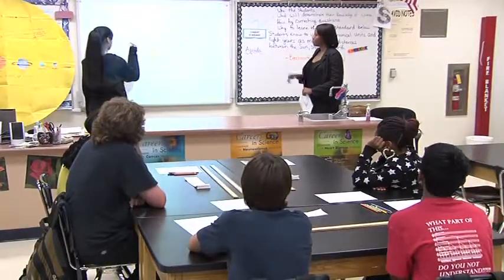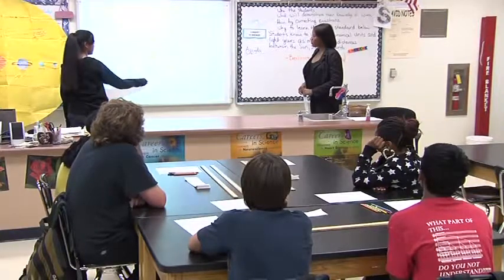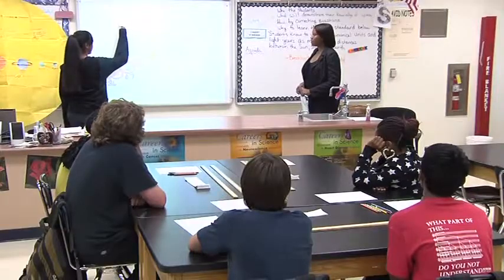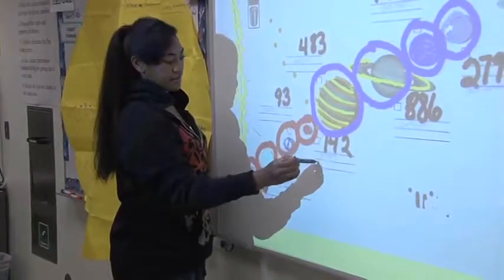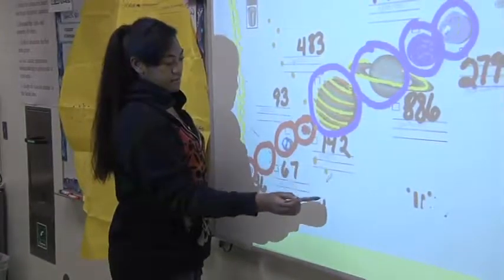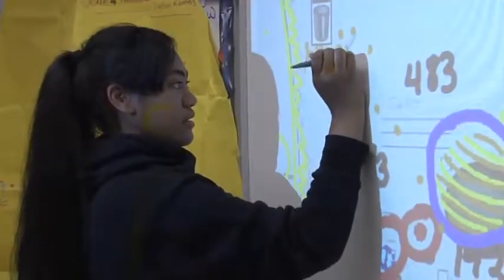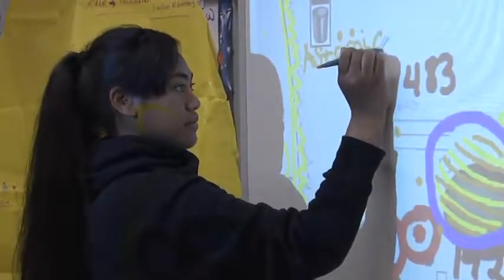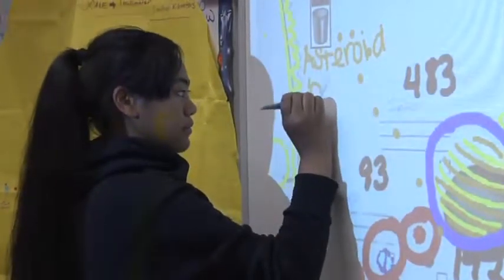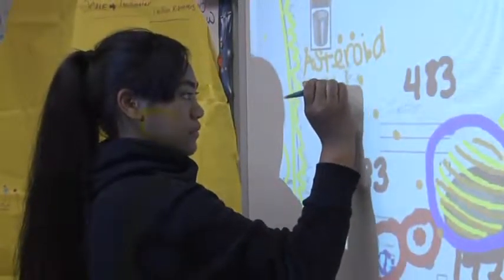And so where's the asteroid belt located? Right here — between Mars and Jupiter. Excellent. And if you would label the asteroid belt for me. Thank you, Mamie.